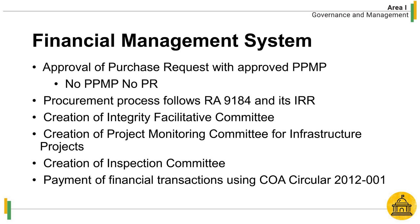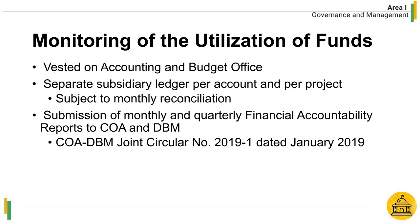For the payment of financial transactions, the Finance Department applies COA Circular 2012-001, which contains the revised guidelines and documentary requirements for common government transactions. The monitoring of fund utilization is vested in the Accounting Office and the Budget Office. Both financial offices maintain separate subsidiary ledgers per account and per project subject to regular reconciliation every end of the month. Monthly and quarterly reports showing appropriation, allotment, obligation or utilization, disbursements, and payables are prepared and submitted to the Commission on Audit and to the Department of Budget and Management.